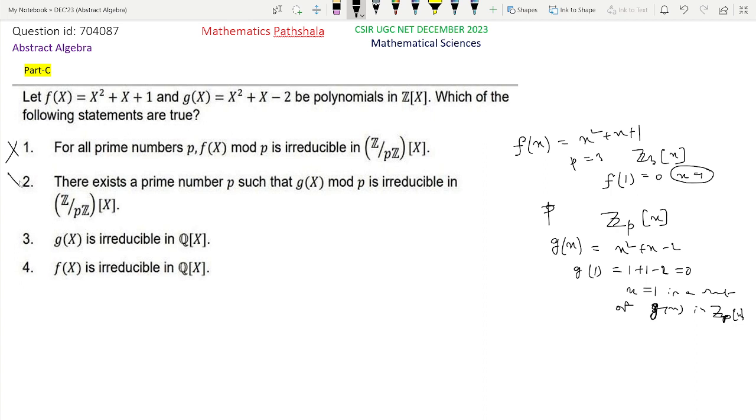Then look at option 3: g(x) is irreducible in Q[x]. See here, this g(x) is very easy to see that x = 1 is clearly a root. So this is (x - 1) times (x + 2). See, these are two polynomials of degree 1, so they are not units.